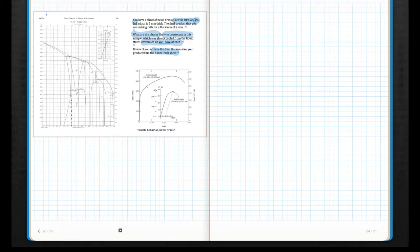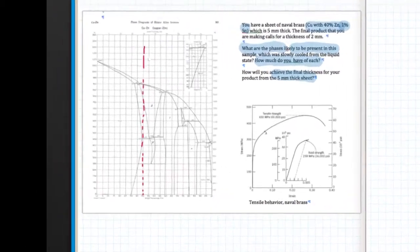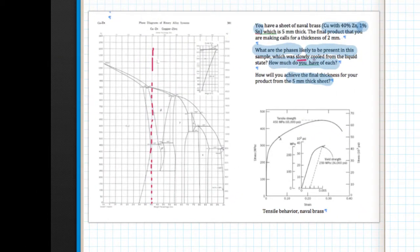So the question is, if it was slowly cooled, what would be the composition? Now this might throw you off, but the notion of slowly cooled means that really you're in equilibrium. And this right here is actually the equilibrium phase diagram.